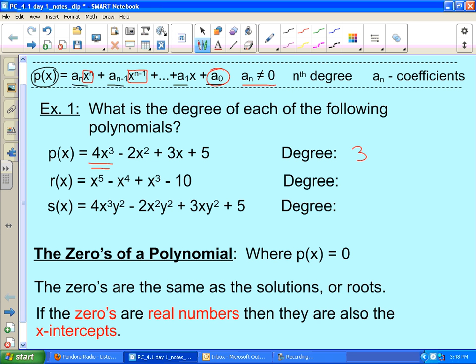We've already talked about a little bit what the graphs look like for these things. The end behaviors and what's going on in between we'll talk about in this chapter. In the r(x) function, we have a fifth degree function. Notice that we're missing some powers - we're missing an x² power between the x³ and the -10 constant, and that's okay. It's still a fifth degree function.